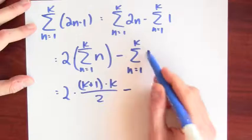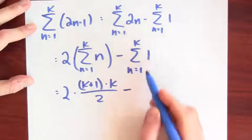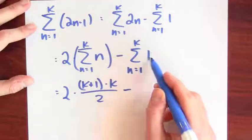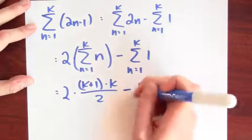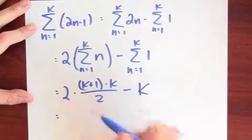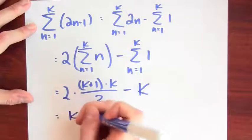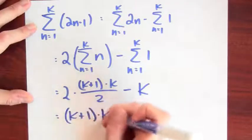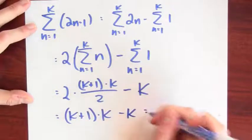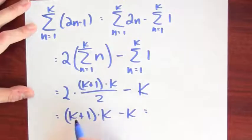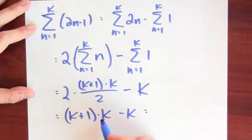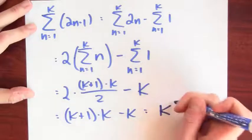And what's just the sum of 1 as n goes from 1 to k? Well, this is 1 plus 1 plus 1 plus 1 k times. So that's just minus k. Now this is 2 times something divided by 2, so this is k plus 1 times k and then minus k. Well, if I expand this out, I've got k plus 1 times k minus 1 times k. This is k squared.